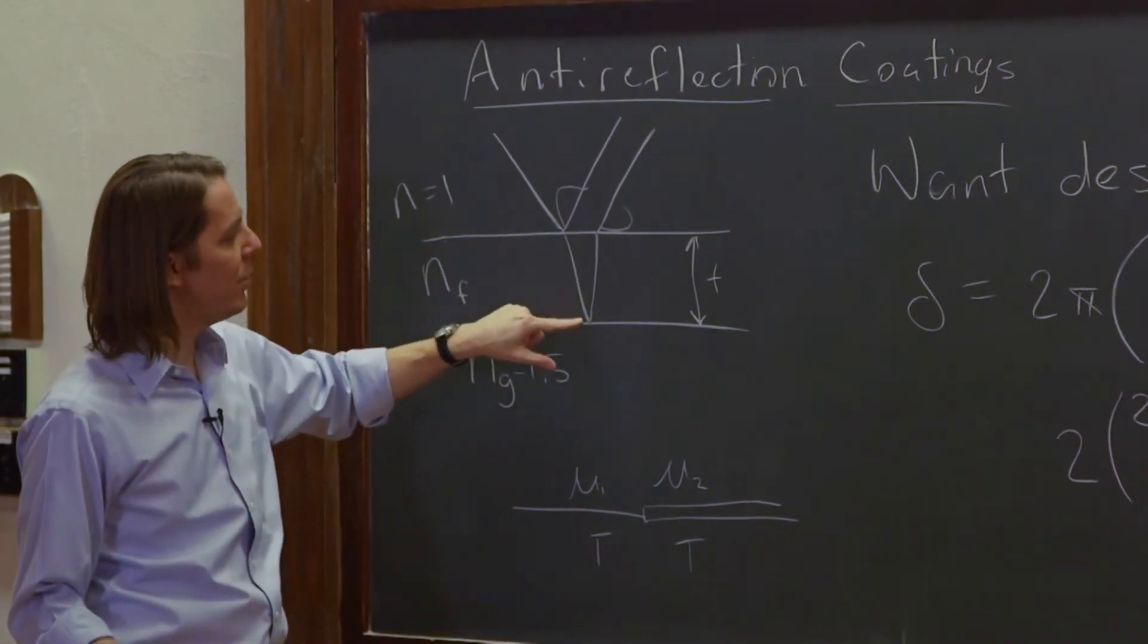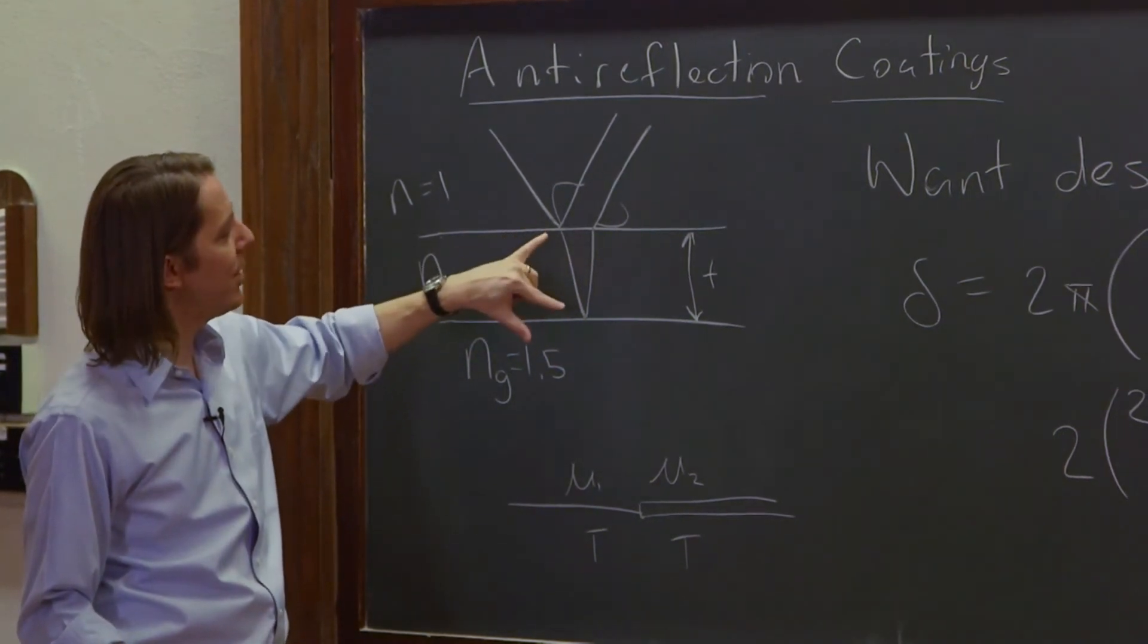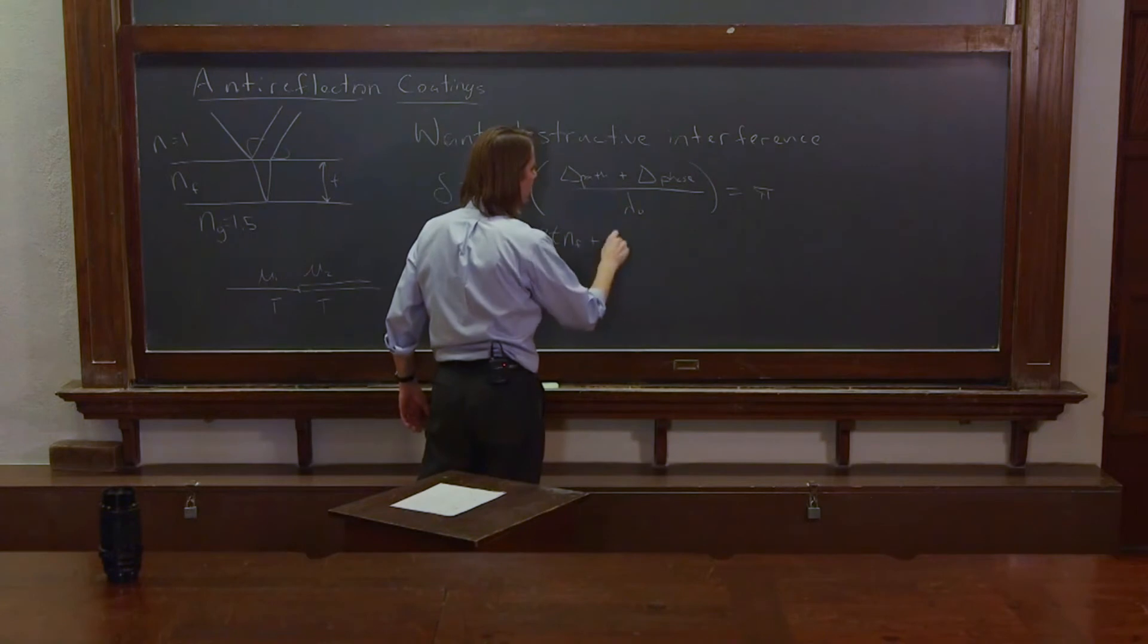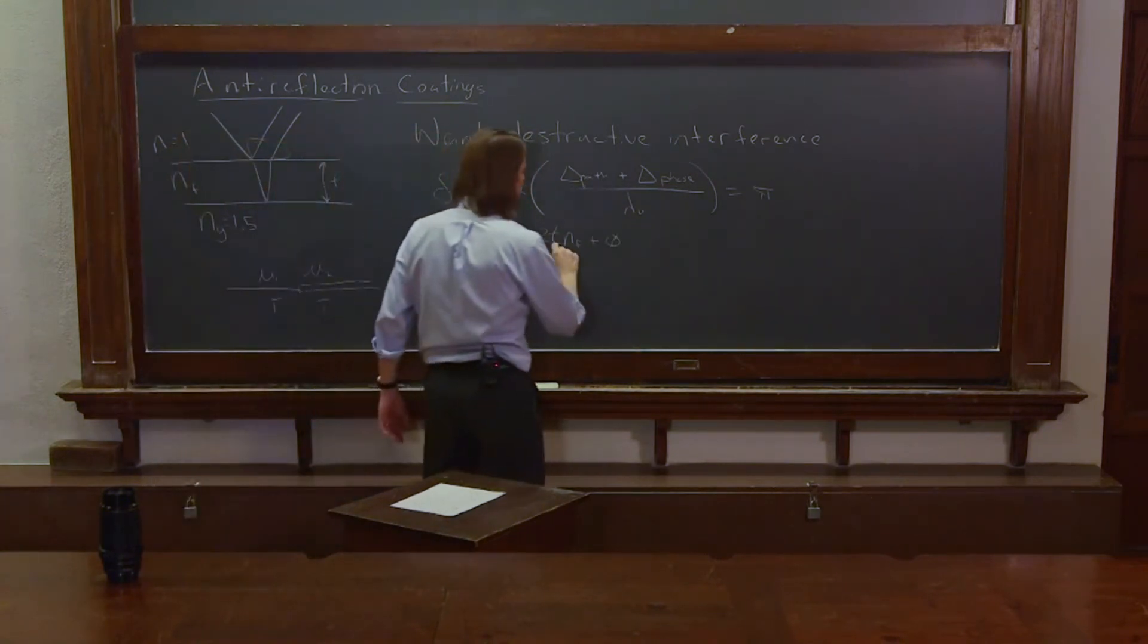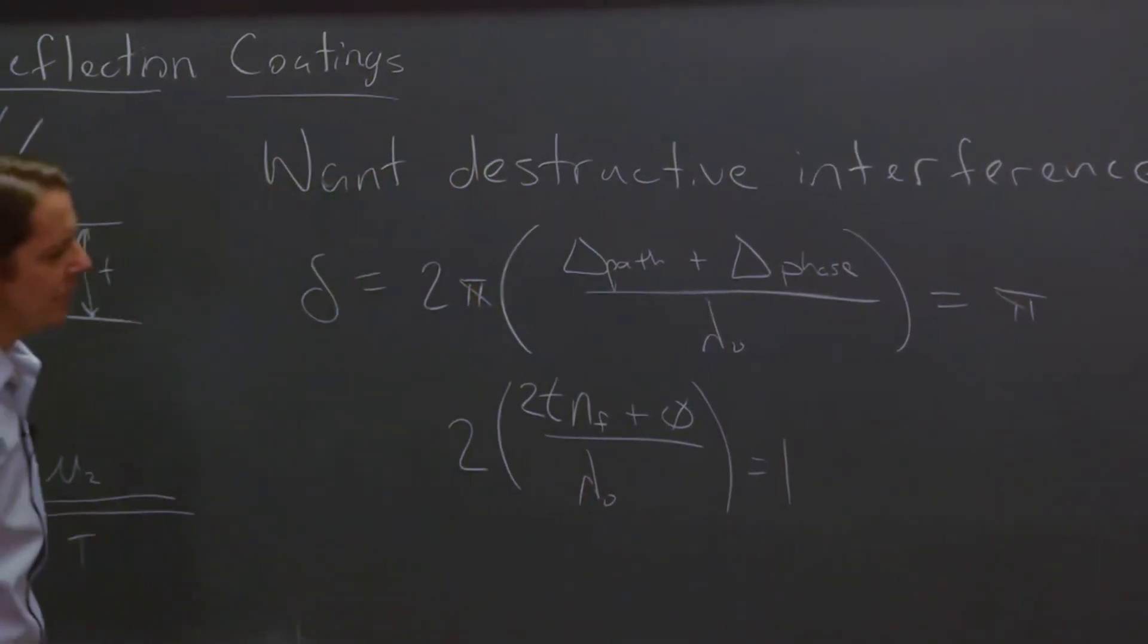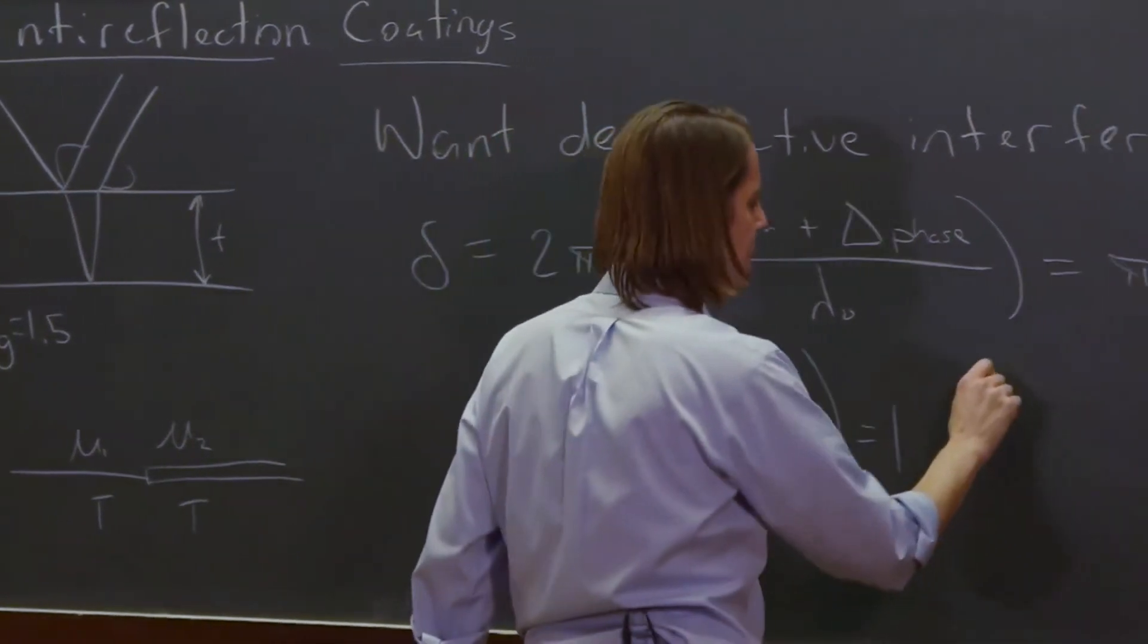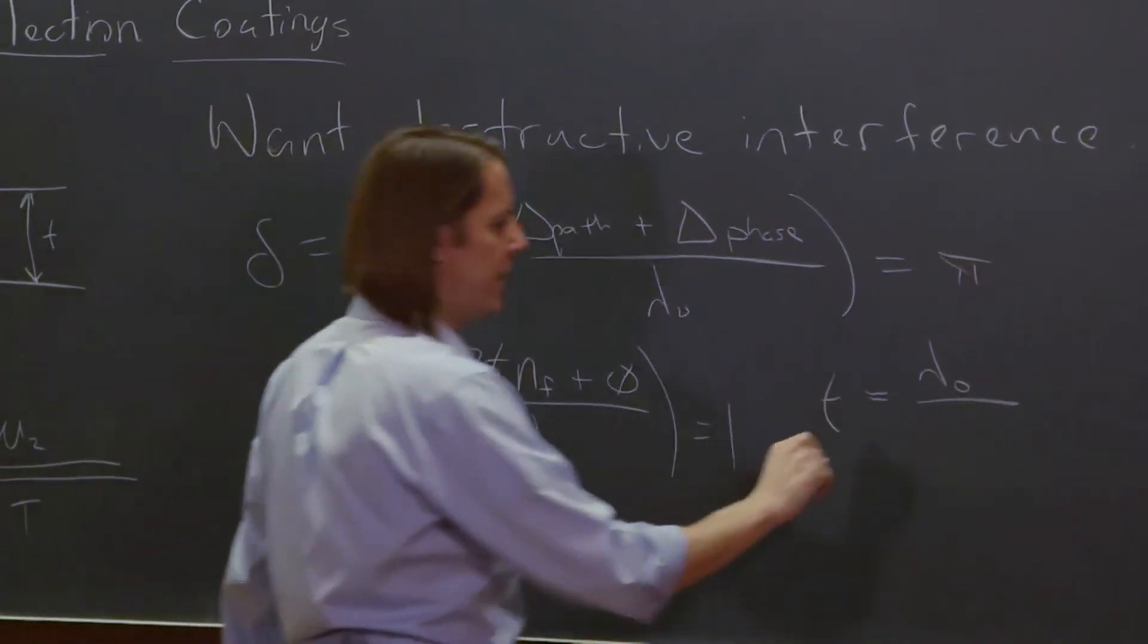But this is now also an external reflection. So there's a π phase shift here. So both rays have the same π phase shift. There's no phase shift on transmission, just like with a string. So actually, the phase shift in terms of length is 0. So there's no phase shift at all there. And then this becomes, this is λ₀, and that has to be equal to 1. So you get 4tnf over λ₀ equals 1. So if you want to solve for the thickness, t equals λ₀ over 4nf.